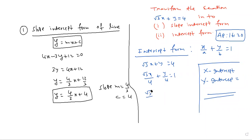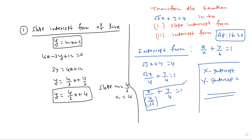You can write this as x by (4 by root 3) plus y by 4 is equal to 1. So the x-intercept is 4 by root 3, and the y-intercept is 4.